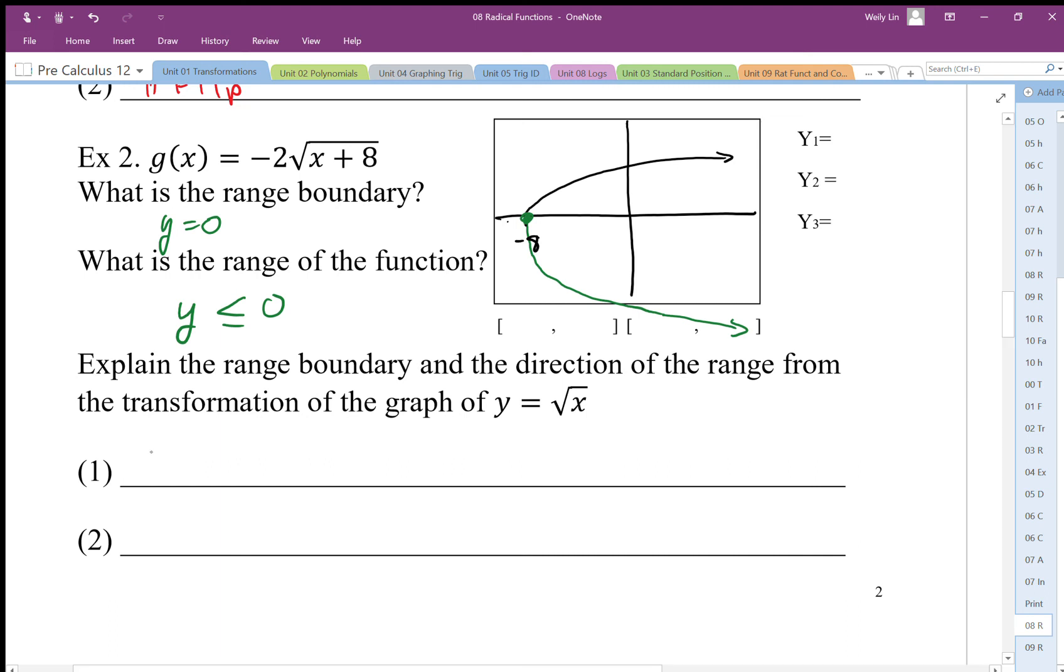So the transformation of this is going to be a vertical flip and a vertical expansion by two. So that's going to give us this new range based on going the opposite direction of what we started with.